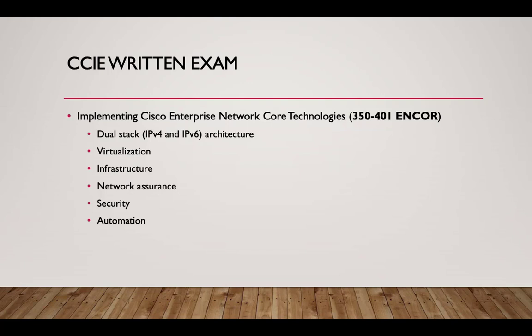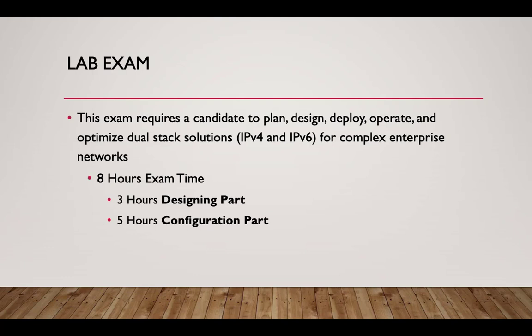The new CCIE written exam for the Enterprise Infrastructure track is called Implementing Cisco Enterprise Network Core Technologies, or ENCOR, with exam code 350-401. Most topics — IPv4 and IPv6 infrastructure, virtualization infrastructure, and network assurance — overlap with the old Routing and Switching exam. Security and automation are the new additions to this written exam.